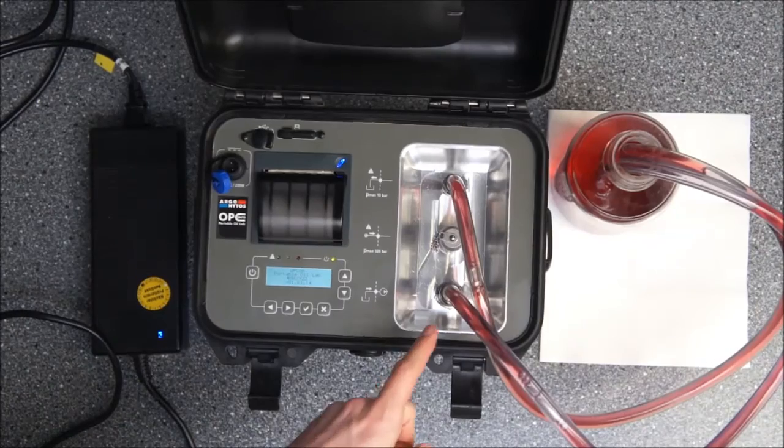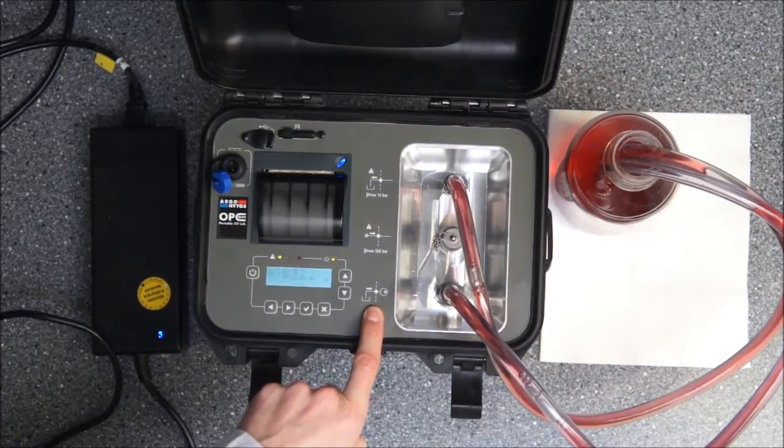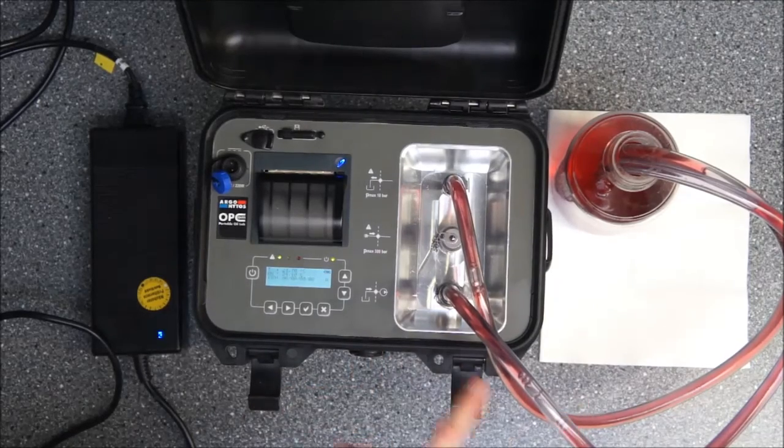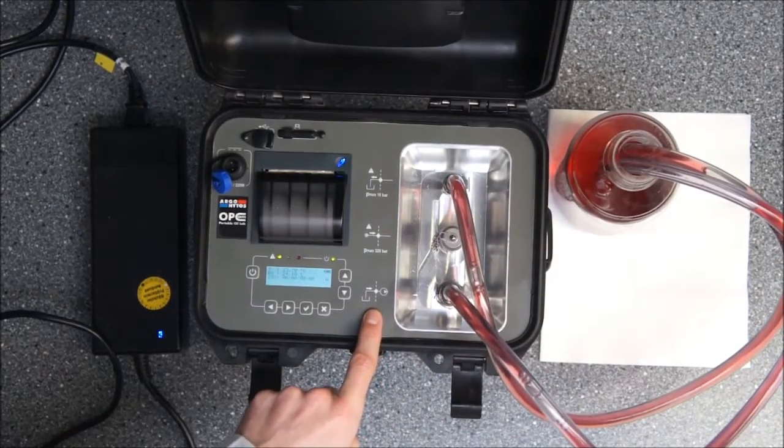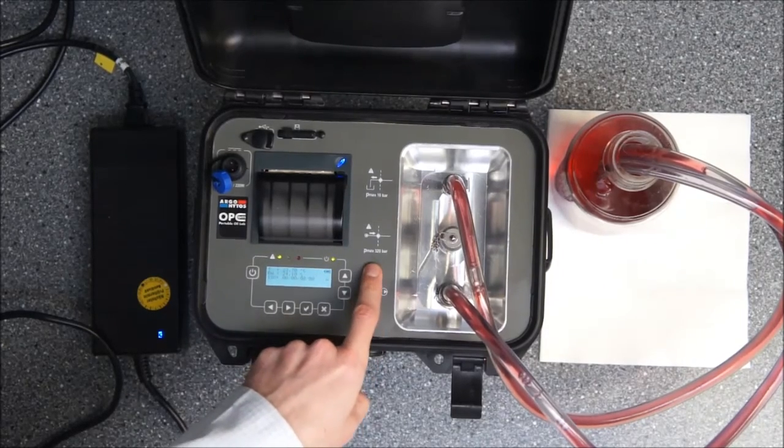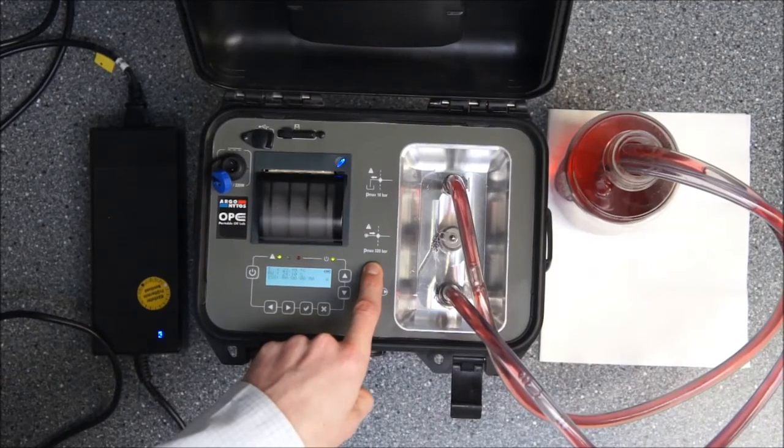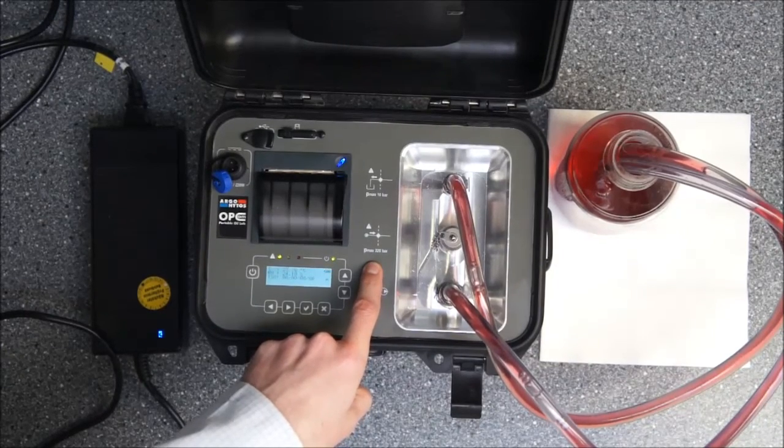On the right side you see the hydraulic connections starting with the suction port. There is an internal pump in the unit that is just sucking the oil from a reservoir or in our case an oil glass sample. In the middle you see the pressure port which can directly take a sample from a pressure line up to 320 bar.